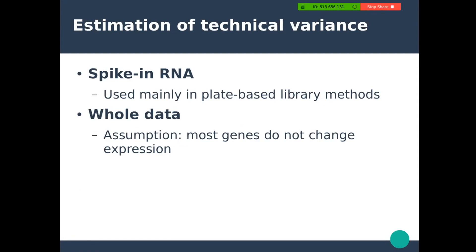In order to separate biological and technical variance, you have to estimate what kind of technical variance you have in the data. Sometimes this has been done with spike-in RNAs, but with droplet-based single-cell methodologies spike-ins are usually not used, because you would end up sequencing a lot of empty barcodes with nothing but spikes, and the cost is not worth it. Spike-ins are mainly used in plate-based methods. Technical variance therefore needs to be estimated from the whole data, assuming that most genes don't change in expression and that the bulk of variability is due to technical reasons.